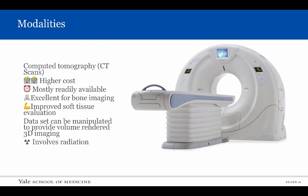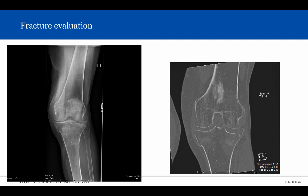Computed tomography, better known as CT scan, is a higher cost examination compared to the plain radiograph. CT scans are readily available at most institutions and are excellent at depicting osseous detail and offer improved soft tissue evaluation. The acquired imaging data set is volumetric, which means that the images can be manipulated in any plane and using advanced software 3D imaging can be performed. CT imaging does involve significantly more radiation than the plain radiograph and this should be considered as part of the risk profile.